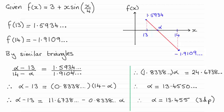So it's just a question of rearranging this and solving for alpha, as you can see what I've done. And that takes you then out to the solution: alpha equals 13.455 to three decimal places.